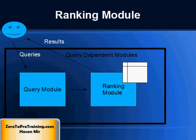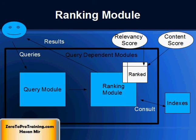The query module then passes the set of relevant pages to the ranking module. The ranking module takes those relevant pages and ranks them according to some criterion, producing an ordered list of web pages. The pages near the top of the list are most likely to be what the user desires. The ranking module is the most important component of the search process. The ordered list filters the less relevant pages to the bottom, making the list more manageable for the user.